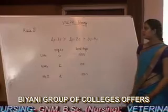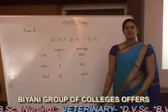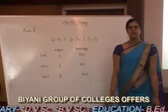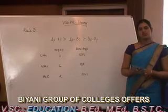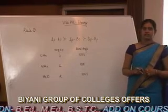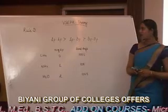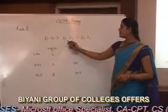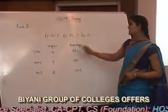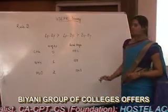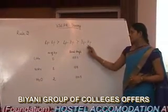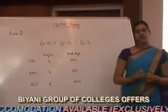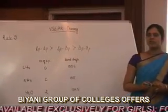Rule second: it states that when the central atom is surrounded both by bonding pairs of electrons and lone pairs of electrons, then that molecule has distorted geometry. Repulsion between lone pair and lone pair is greater than repulsion between lone pair and bond pair, which is greater than repulsion between bond pair and bond pair. Hence, bond angle decreases as the number of lone pairs increases.